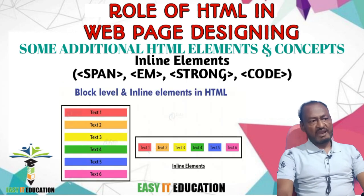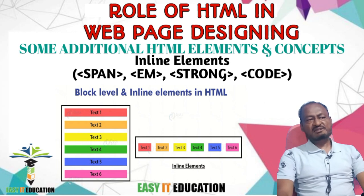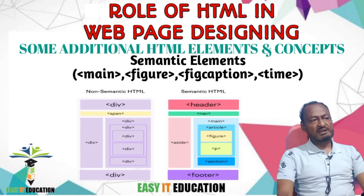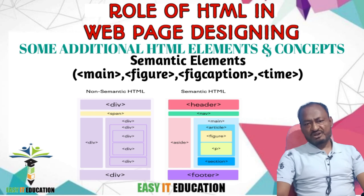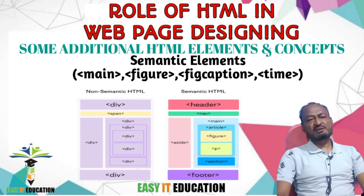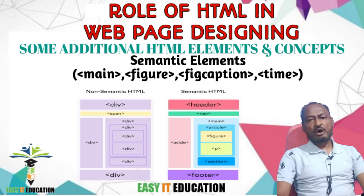Number 7: Inline Elements — Span, Em, Strong, Code, etc. These elements are used to apply specific formatting or styling to small pieces of text within a paragraph or other block-level elements. Number 8: Semantic Elements — Main, Figure, FigCaption, Time, etc. HTML5 introduced several semantic elements that provide more meaning and context to the content, aiding accessibility and search engine optimization.